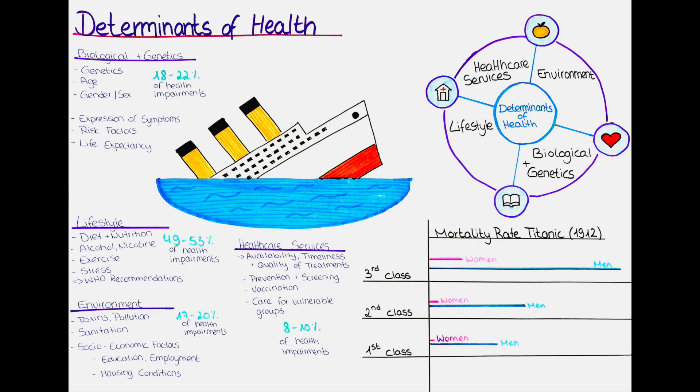All of these determinants of health interact with each other in complex ways, making it difficult to isolate any one factor as the sole cause of a particular health outcome. However, understanding these determinants is critical for developing effective strategies for improving public health.